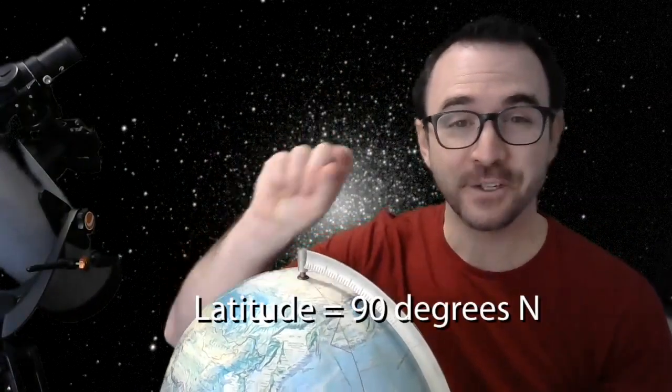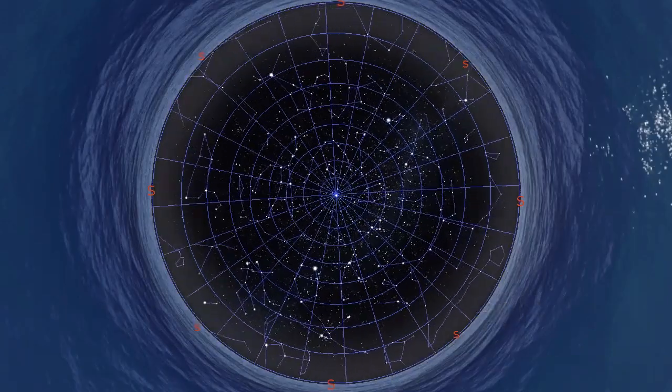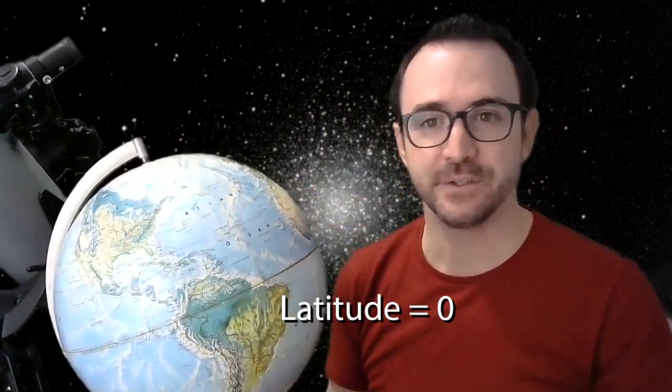So how do you know how much of your sky is circumpolar? Well, starting from the north star, it's an amount of sky equal to your latitude. So if you're here at the north pole, the north star is directly overhead and your entire sky is circumpolar. No stars rise or set. They just spin around you.